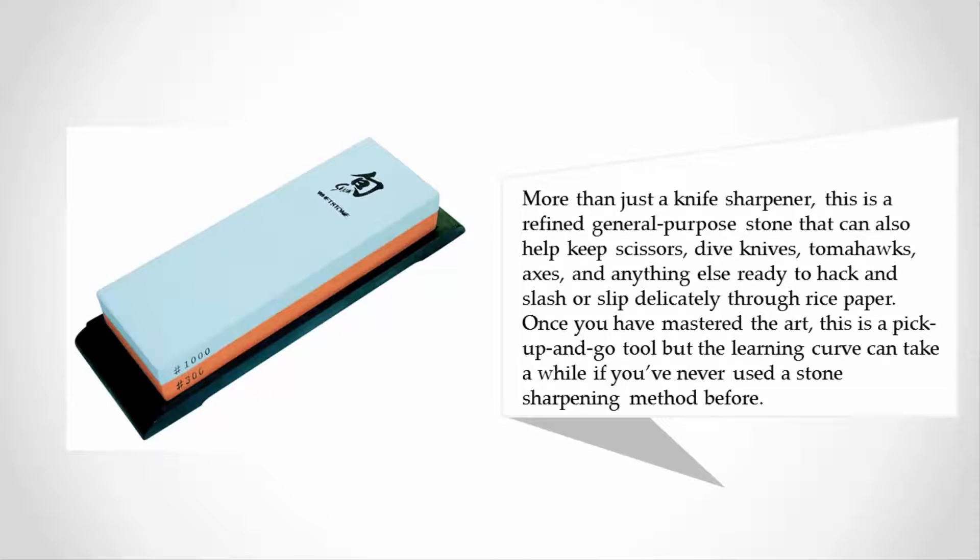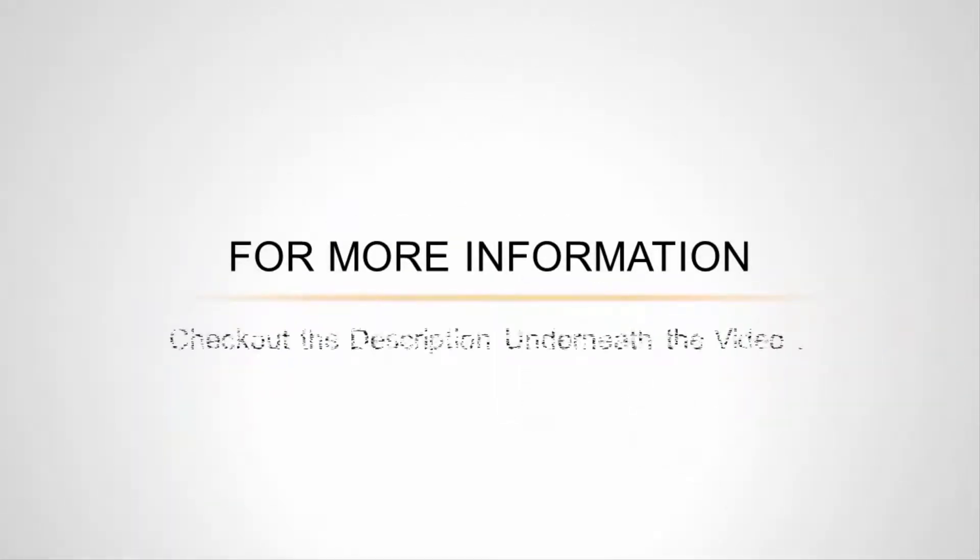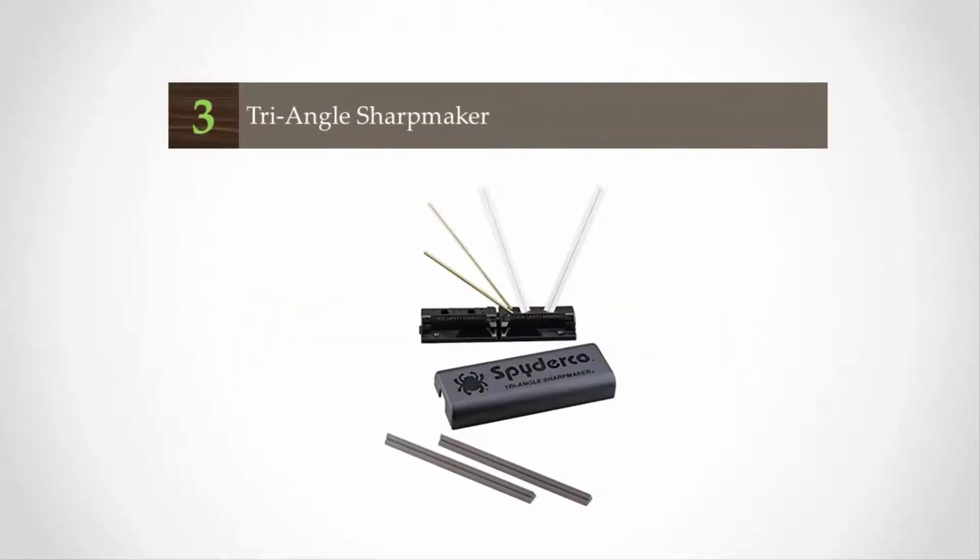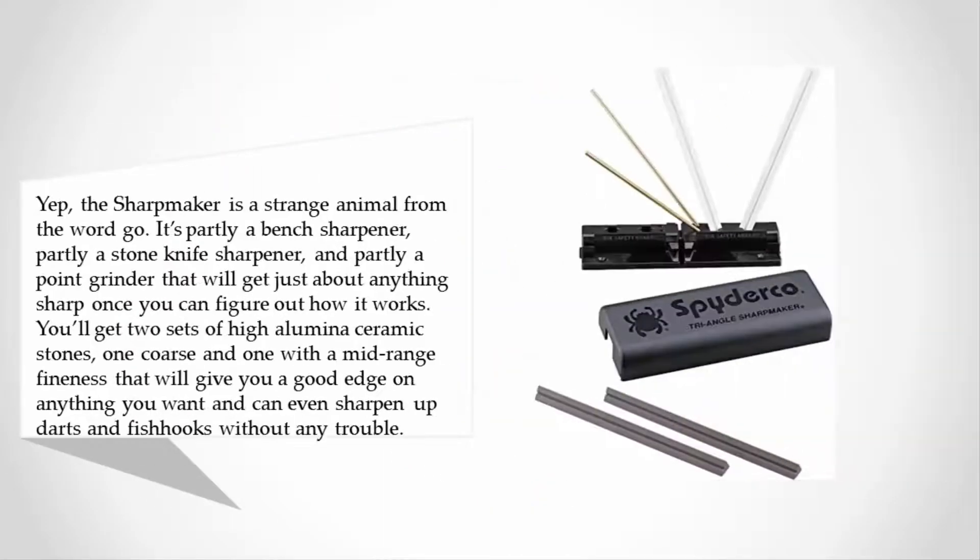Halfway through our list at number three, the Sharp Maker is a strange animal from the word go. It's partly a bench sharpener, partly a stone knife sharpener, and partly a point grinder that will get just about anything sharp once you can figure out how it works.